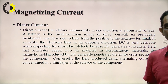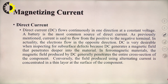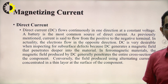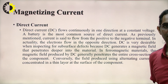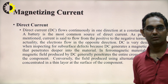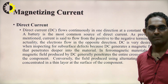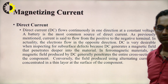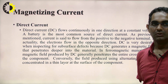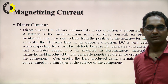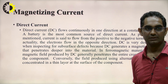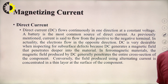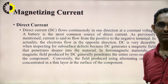Magnetizing current types used in magnetic particle inspection include direct current (DC), which flows continuously in one direction at a constant voltage. A battery is the most common source of DC. Current is said to flow from positive to negative terminal, while electrons actually flow in the opposite direction. DC is very desirable when inspecting for subsurface defects because it generates a magnetic field that penetrates deeper into the material.